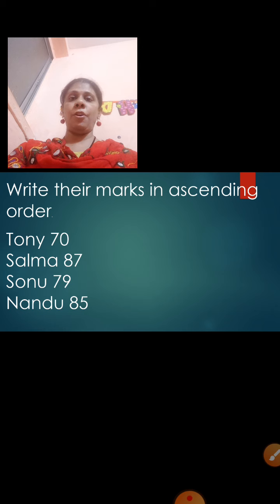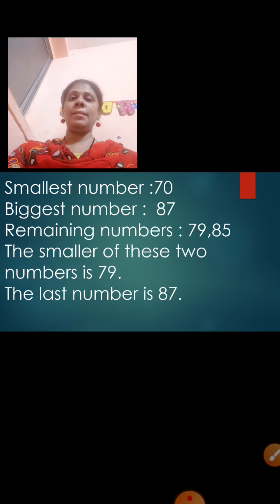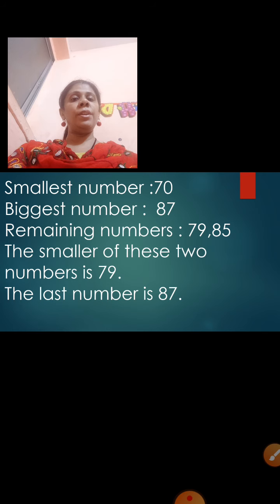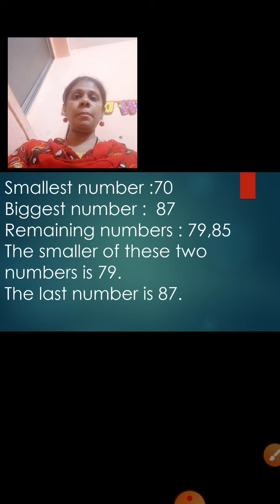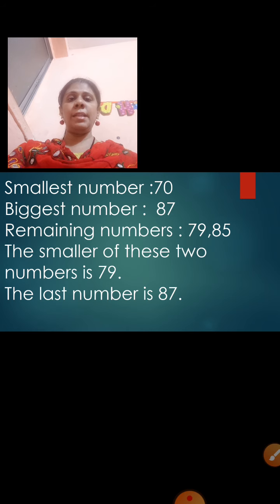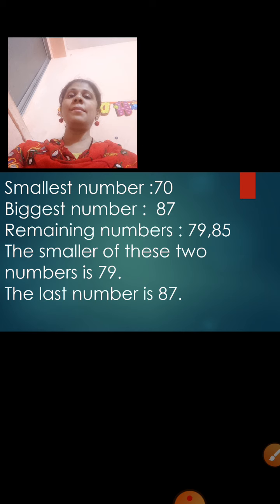In ascending order, we begin with the smallest number. The smallest number is 70. Then we find the biggest number, which is 87. Now we have two remaining numbers: 79 and 85. The smaller of these two is 79. So our middle numbers are 79 and 85, and the last number is 87.